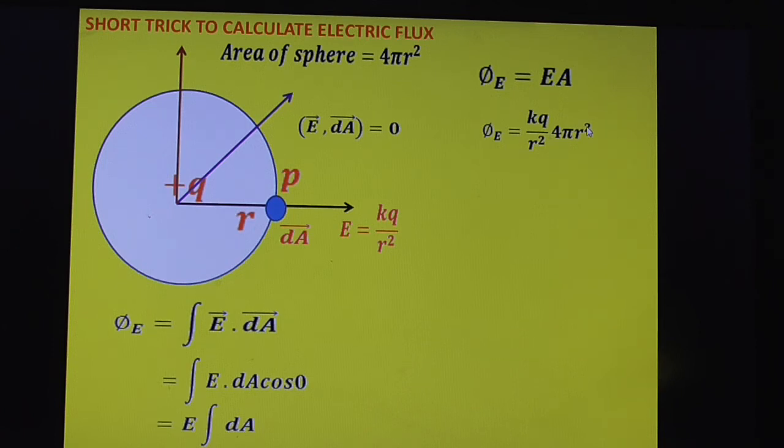Clearly r square and r square gets cancelled. Here you can write the value of K. K is equal to 1 by 4 pi epsilon naught. Substitute K value here. In place of K write 1 by 4 pi epsilon naught. You can cancel this 4 pi and 4 pi. Therefore electric flux given by Q by epsilon naught.